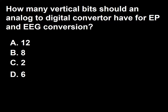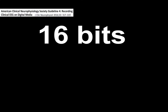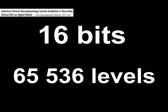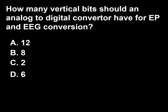Next question: How many vertical bits should an analog-to-digital converter have for EP and EEG conversion? A, 12; B, 8; C, 2; D, 6. The correct answer in the past was 12 bits. The new recommendation is 16 bits, which corresponds to 65,536 levels. Using a window of ±1.638 millivolts per channel represents a resolution of 0.05 microvolts. So the answer to this question, at least for the moment, is 12.